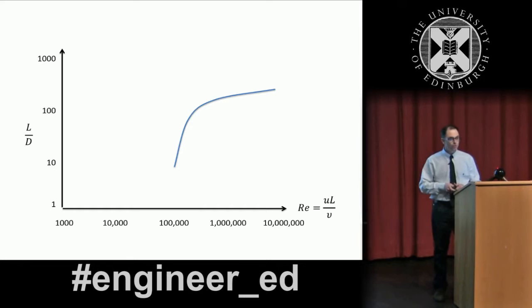So that allows us to look at how the lift over drag ratio varies with the Reynolds number. And as you can see, if you have a large Reynolds number, which means either a very high velocity or a very large size, you will have a large Reynolds number and a very efficient foil.